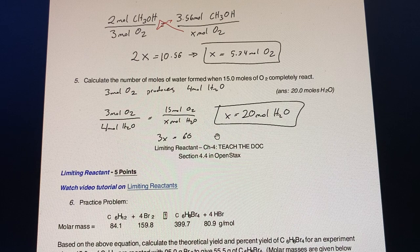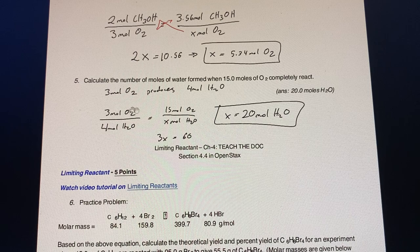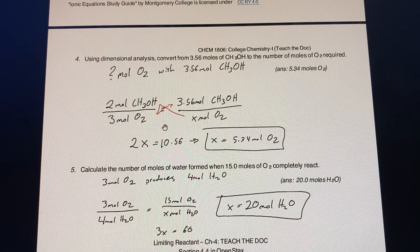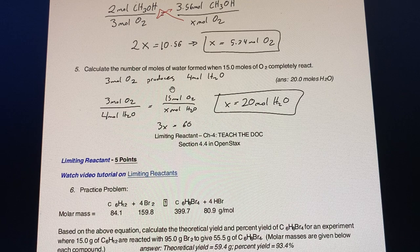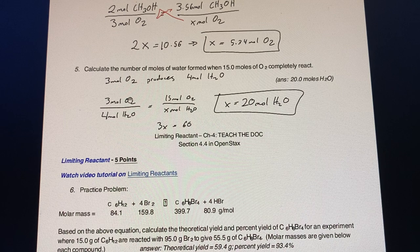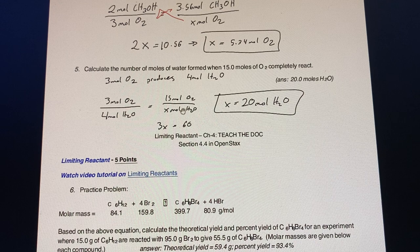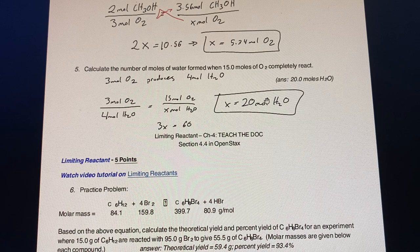We have the same principle here for 15 moles of O2, as we have 3 moles of O2 produces 4 moles of H2O as we had in the first given equation. So we have 3 to 4 is 15 to x. We cross multiply, so x times 3 and 4 times 15, which is 3x equals 60. Therefore we have 60 divided by 3, which equals 20 moles of H2O.